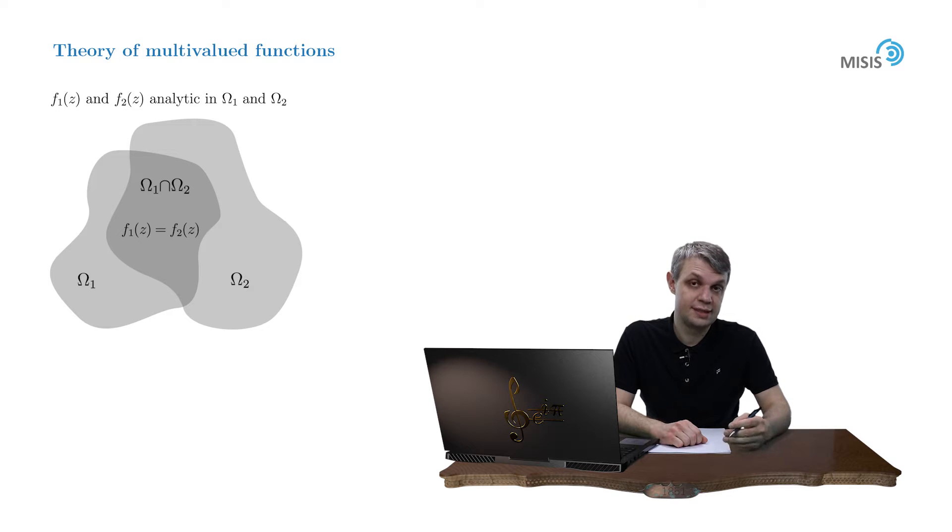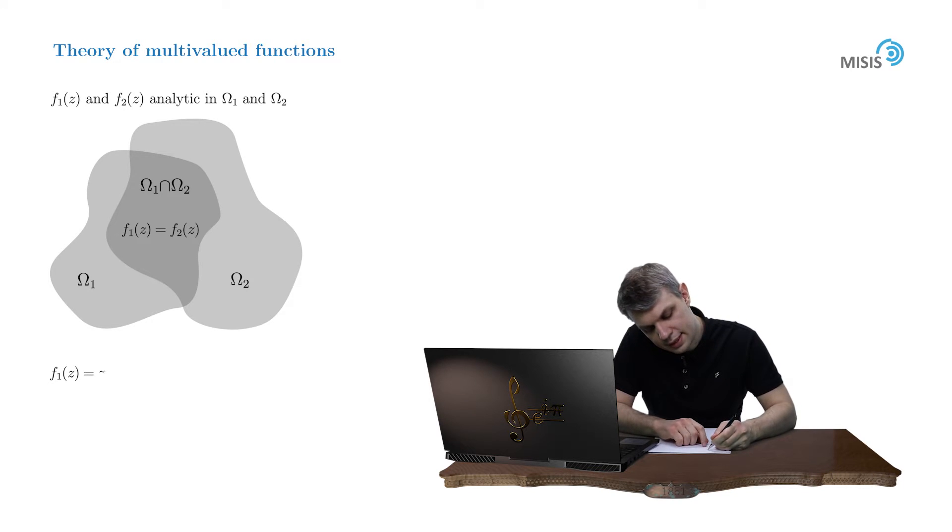To understand better this definition, let's study a simple example. Consider the following function f₁ equals z minus z squared plus z cubed minus z to the fourth and so on, which can be conveniently put under the sum sign like this: negative 1 to the n times z to the n plus 1.